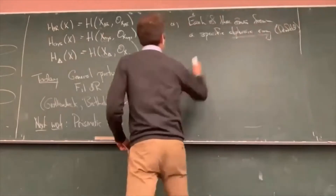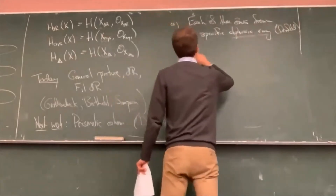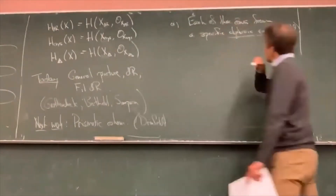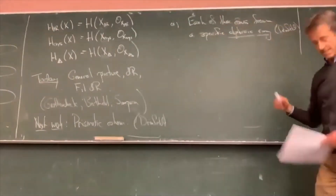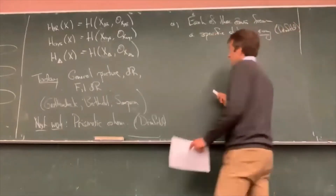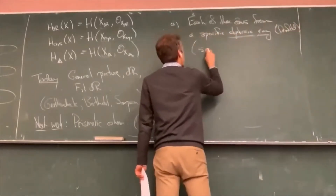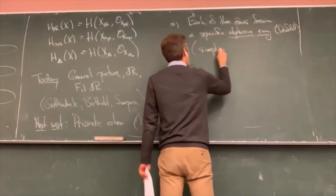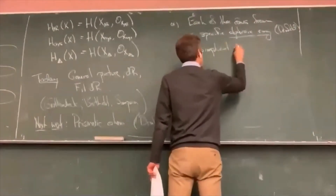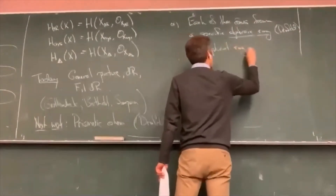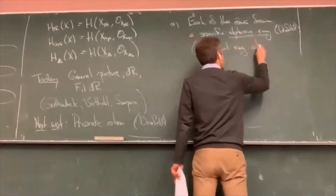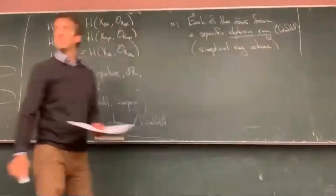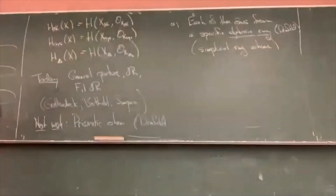The attention then shifts from these maybe unwieldy cohomology theories to perhaps more humble things like algebraic rings. What do I mean by an algebraic ring? A typical thing we might want to consider will be a simplicial ring scheme, commutative. In this talk, all rings and algebras will be commutative.